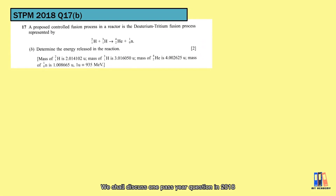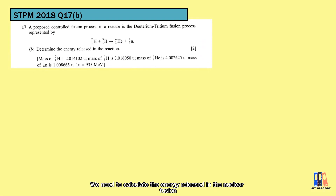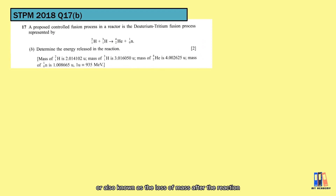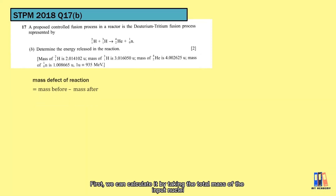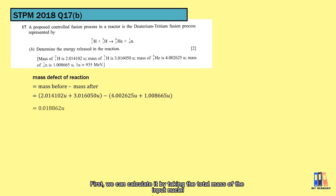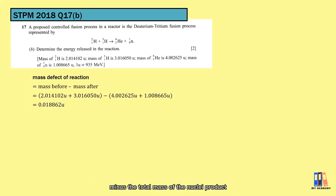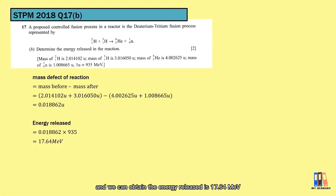Let's discuss a past year question from 2018, calculating the energy released in a nuclear fusion reaction. This can be done by calculating the mass defect of the reaction — the loss of mass after the reaction. We take the total mass of the input nuclei minus the total mass of the product nuclei, apply E = mc², and obtain the energy release of 17.64 MeV.